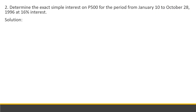Next: exact simple interest. Determine the exact simple interest on 500 pesos for the period from January 10 to October 28 of the year 1996. Note that 1996 is a leap year, at 16% interest. For exact simple interest, we need to consider the specific dates and whether it is a leap year.